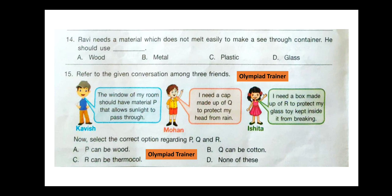Question 15. Refer to the given conversation among three friends. Kavish: the window of my room should have material P that allows sunlight to pass through. Mohan: I need a cap made up of Q to protect my head from rain. Ishita: I need a box made up of R to protect my glass toy inside from breaking. The correct answer is option C — R can be thermocol. P cannot be wood because the window needs to allow sunlight through, and Q cannot be cotton because Mohan needs rain protection.